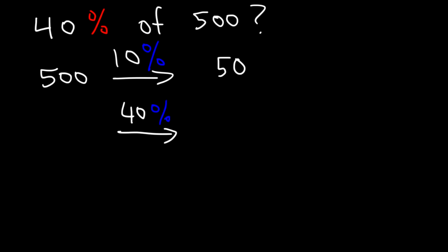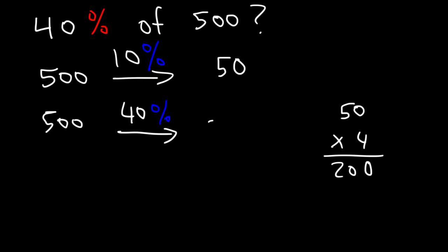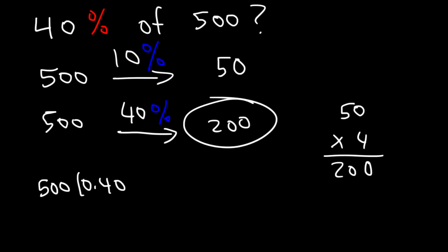40% is simply 10% times 4, so if we multiply 50 by 4 — imagine you have four $50 bills, that's 200 — 4 times 0 is 0 and 4 times 5 is 20, so 40% of 500 is 200. If you multiply 500 by 0.4, this will also give you 200.